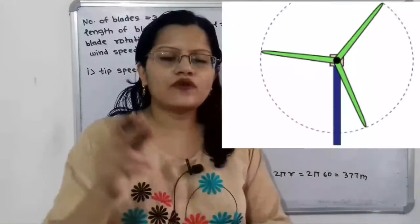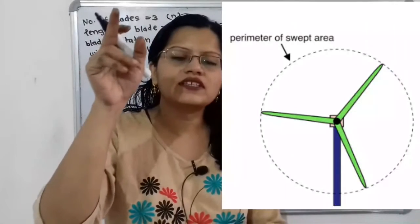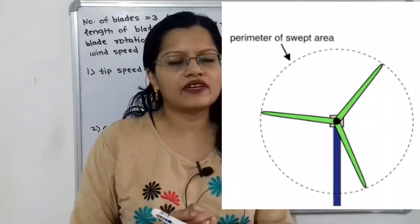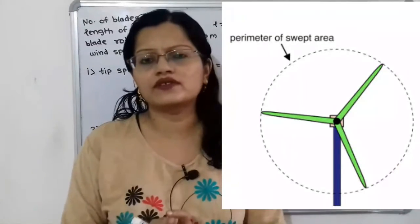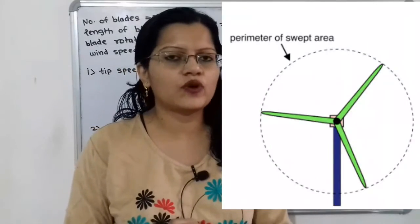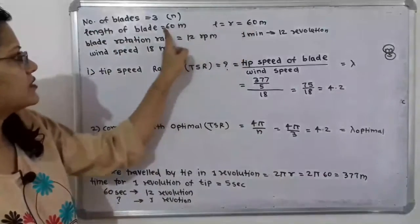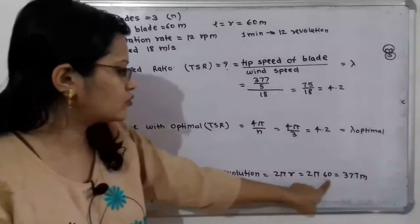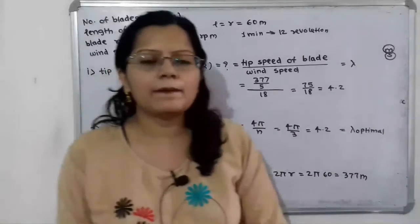When the blade tip completes one revolution, it travels along a circular path, so the distance traveled equals the circumference of the circle: 2πr. With r = 60 m, the distance traveled is 2π × 60 = 377 meters.